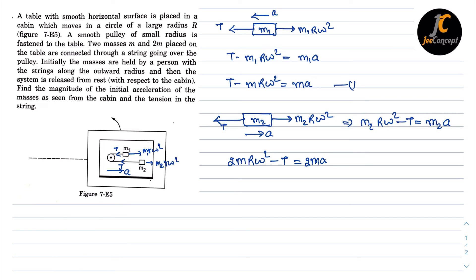Let's say this is equation 1 and this is equation 2. Now adding 1 and 2 we will get M R omega square is equal to 3M A. So M will cancel out. The acceleration will become R omega square upon 3.